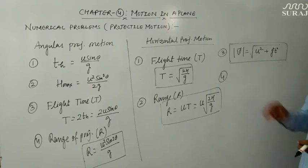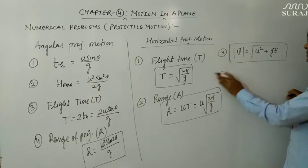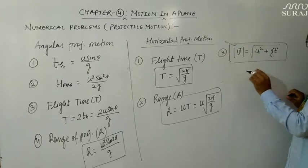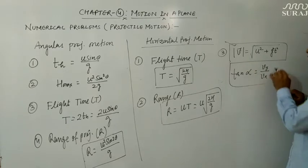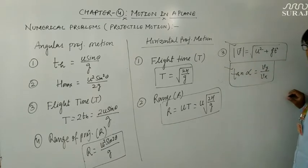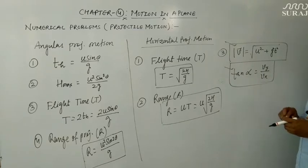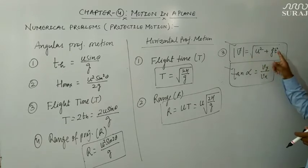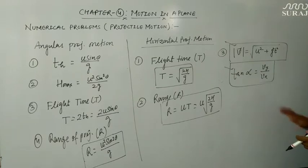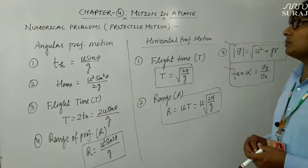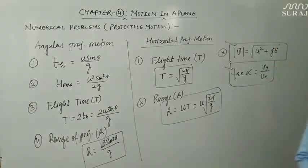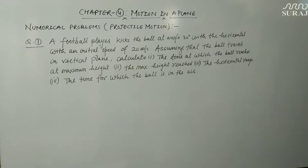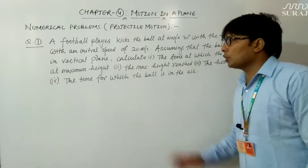For detailed discussion you can watch the previous videos of this chapter. The direction of velocity can be found using tan α = vy / vx. With this formula we can find the direction of velocity at any time t, and with the magnitude formula we can find the speed at any point P, where u is initial velocity and g is gravity. These are the formulas derived in angular and horizontal projectile motion. Now let us do some numerical problems on these formulas. We are moving on to the first question on projectile motion.